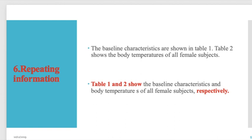The last mistake is repeating information. Instead of saying 'The baseline characteristics are shown in Table 1. Table 2 shows the body temperature of all female subjects,' we can combine both: 'Tables 1 and 2 show the baseline characteristics and body temperature of all female subjects, respectively.'